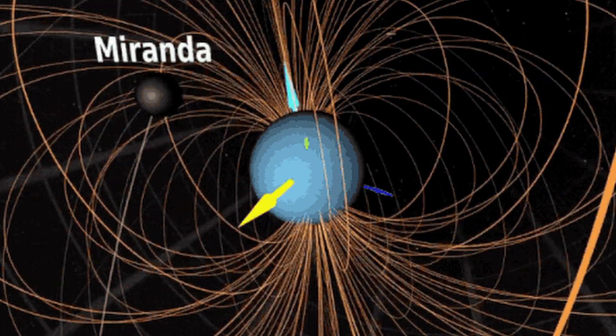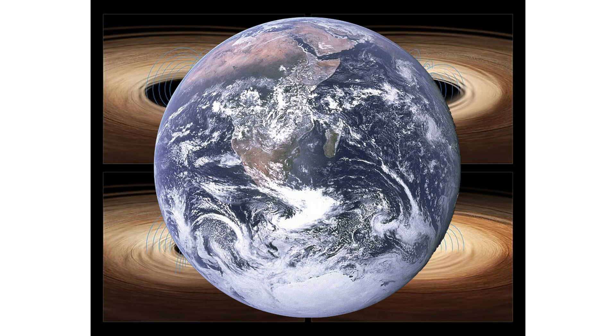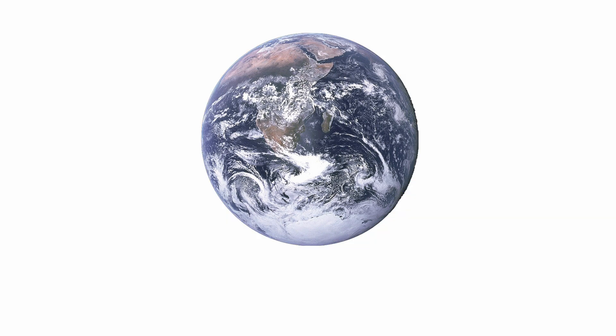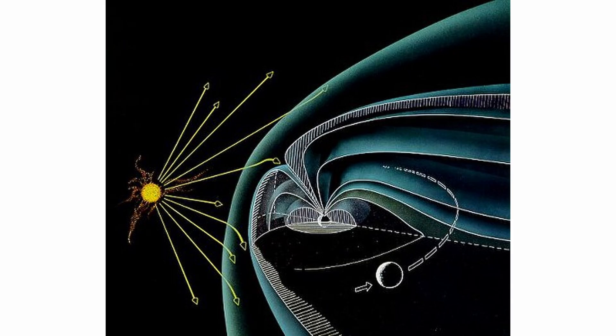Now, let's talk about Earth's secret weapon: its magnetic field. This invisible force field is basically Earth's version of a superhero cape. It deflects solar wind, which sounds harmless, but is actually a deadly stream of charged particles that would fry us faster than bacon on a hot skillet.